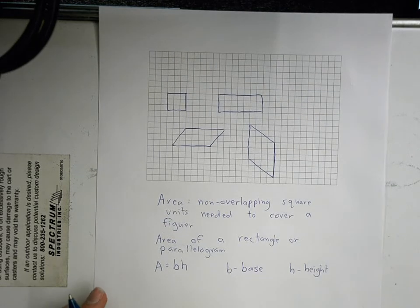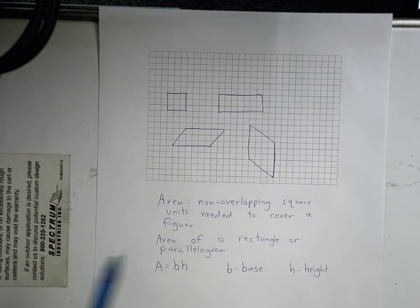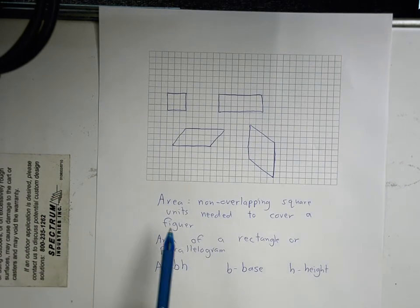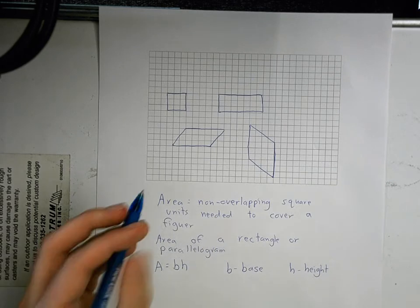Okay, so we've done perimeters and circumferences, which is the straight distance around a figure. Today we're going to do area. And area is the non-overlapping square units needed to cover a figure.